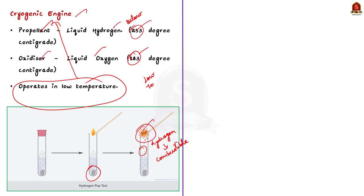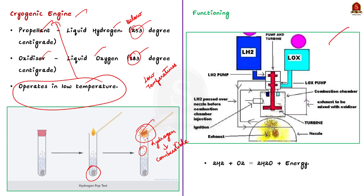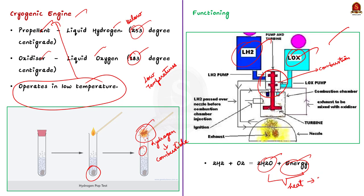In a simplified version: liquid hydrogen is stored in the blue tank and liquid oxygen in the cyan tank. These two mix in the combustion chamber where hydrogen reacts explosively with oxygen to produce water vapor and energy. This reaction generates tremendous heat causing water vapor to expand and exit the engine nozzles at a speed of 10,000 miles per hour, creating the thrust that propels the rocket from Earth according to Newton's third law. One of the biggest advantages of the cryogenic engine is that it is eco-friendly, as the exhaust is mainly water vapor.